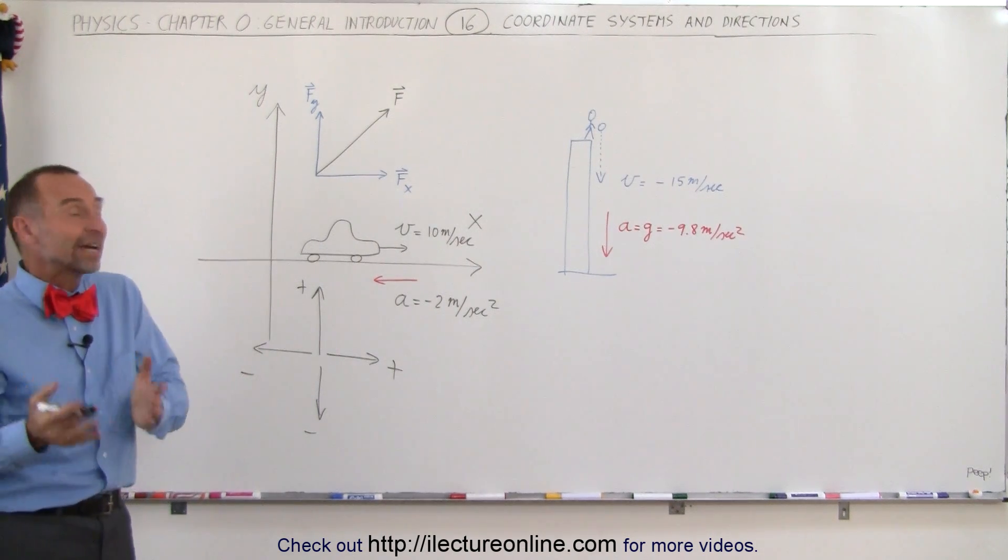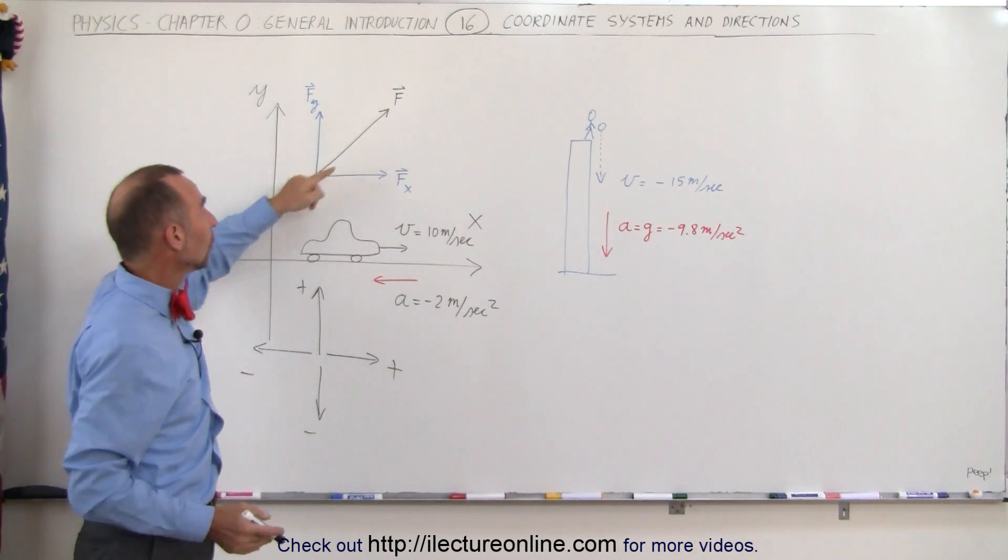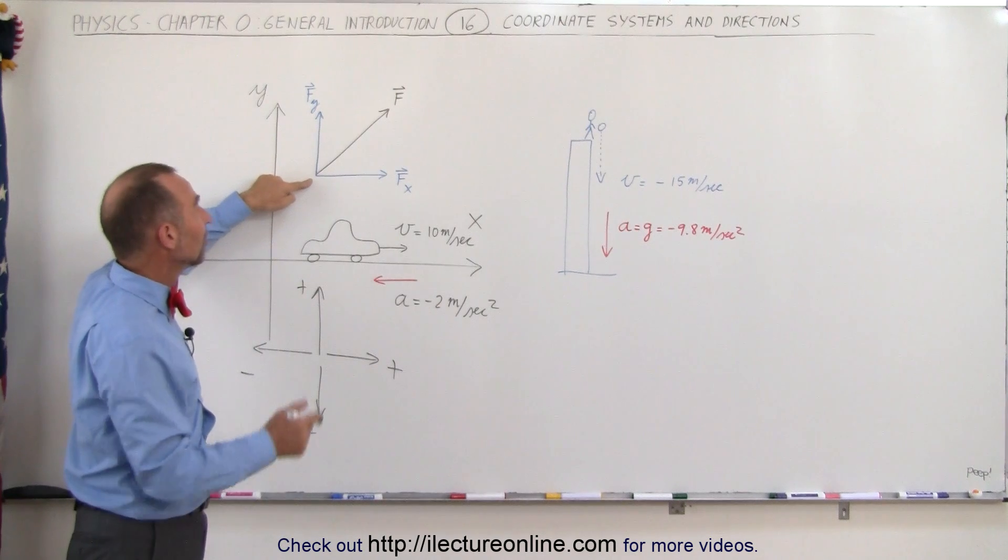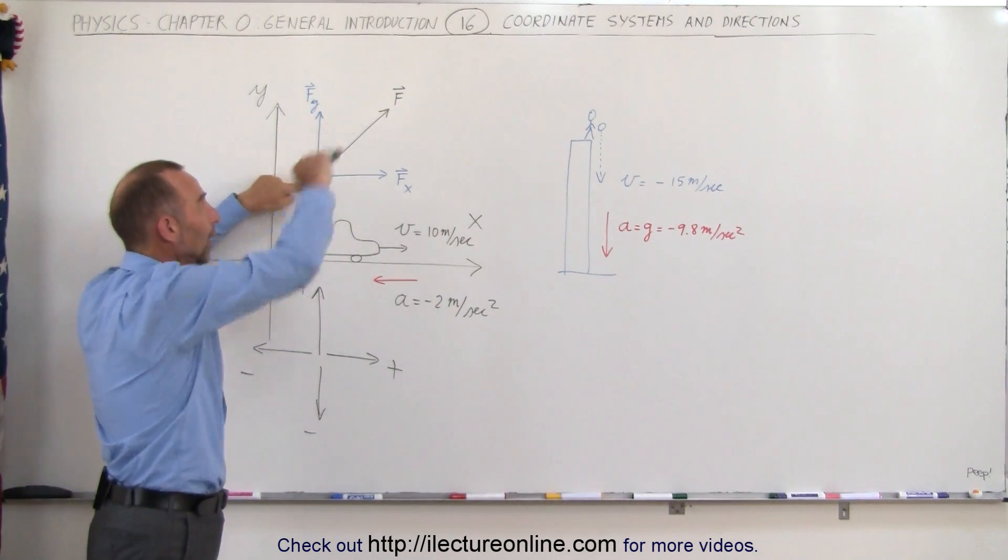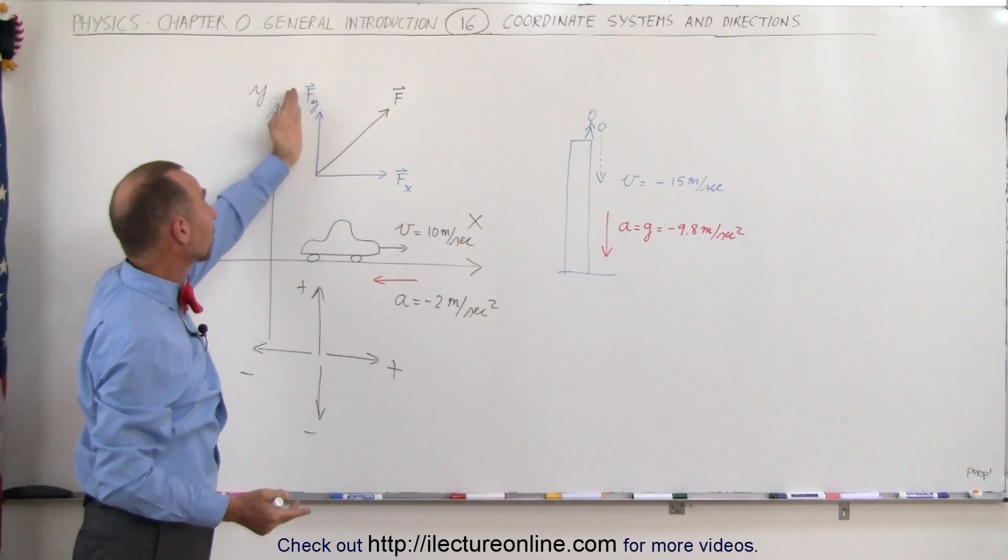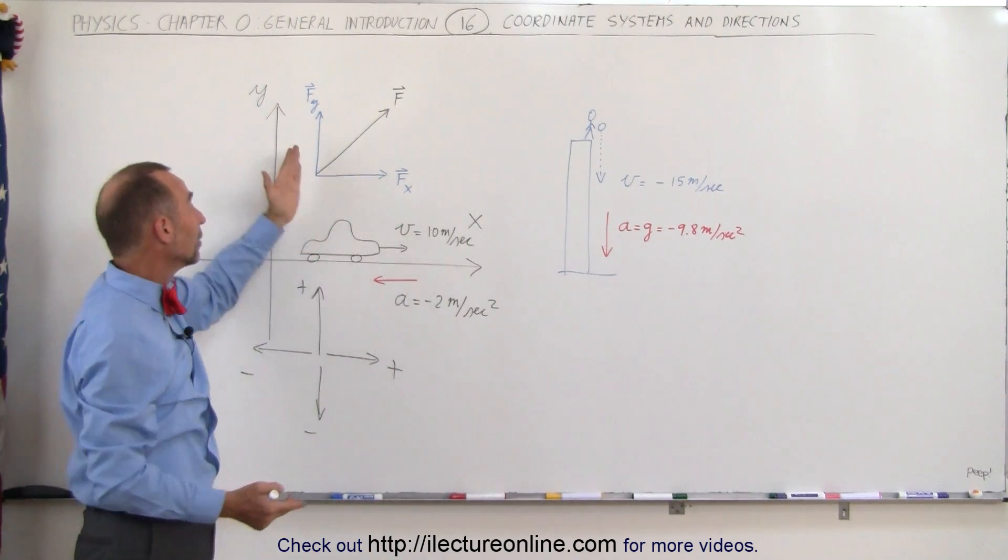So when we draw a vector in our coordinate system, and notice that the direction of the vector is this way, we'll have an x component, we'll have a y component. Since the vector is pointing to the upper right corner, then the x component will be positive, the y component will be positive because both components are pointing in positive directions.